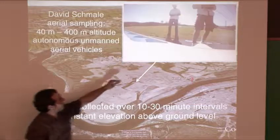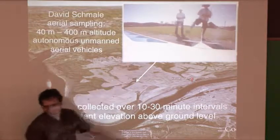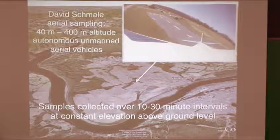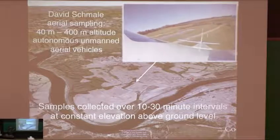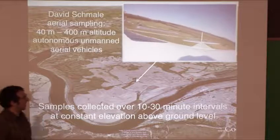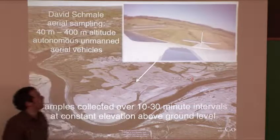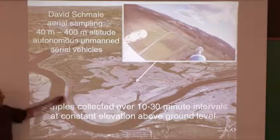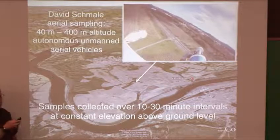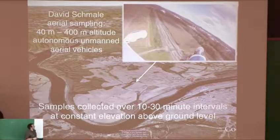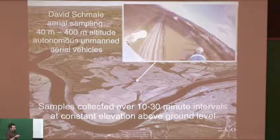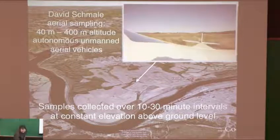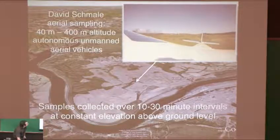We use petri dishes on autonomous aerial vehicles — essentially model airplanes. We can take them up to 40 or 400 meters altitude, open the petri dishes, fly around for an appropriate sampling time of 10 to 30 minutes, sampling a large volume of air. Alternatively we could put up a tower, but that doesn't sample a large enough volume. We then open the petri dishes, take them down, and analyze them in the lab to determine what was in the atmosphere.